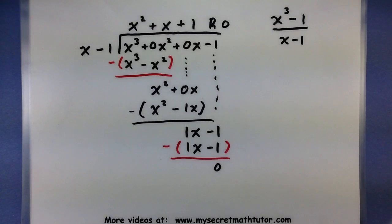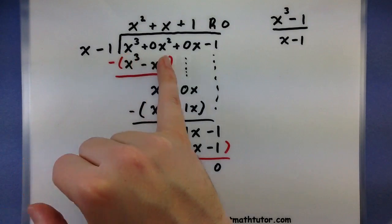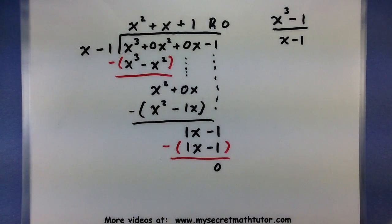So remember that when doing the long division process, it looks a lot like normal division with numbers. Make sure that you write your polynomial that is being divided in descending order, and you put in any placeholders for those missing powers of x. If you'd like to see some more videos, please visit MySecretMathTutor.com.